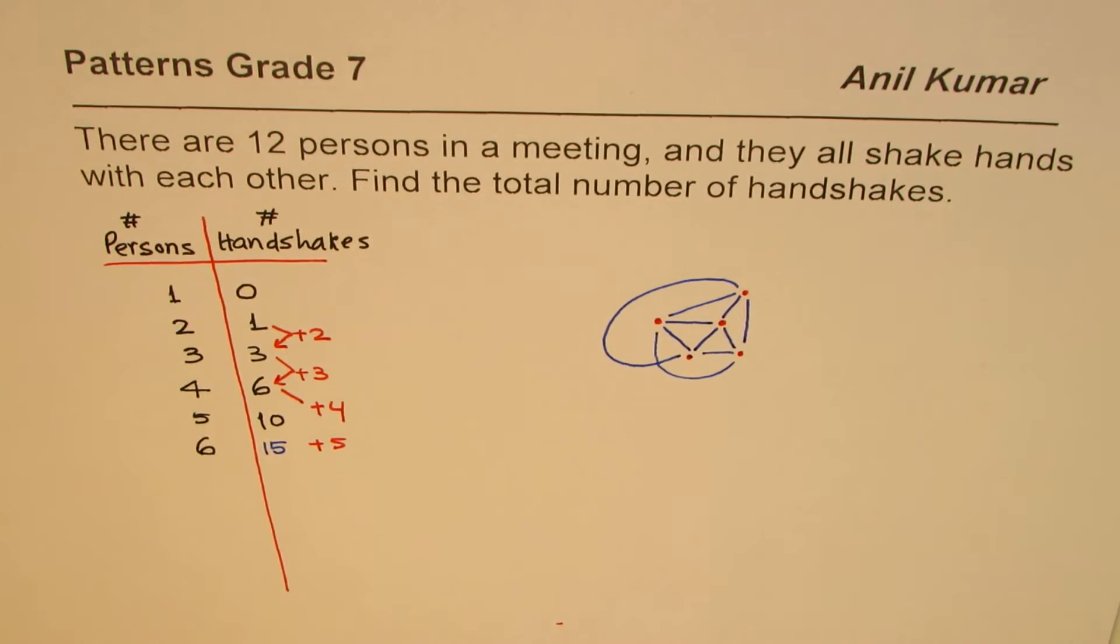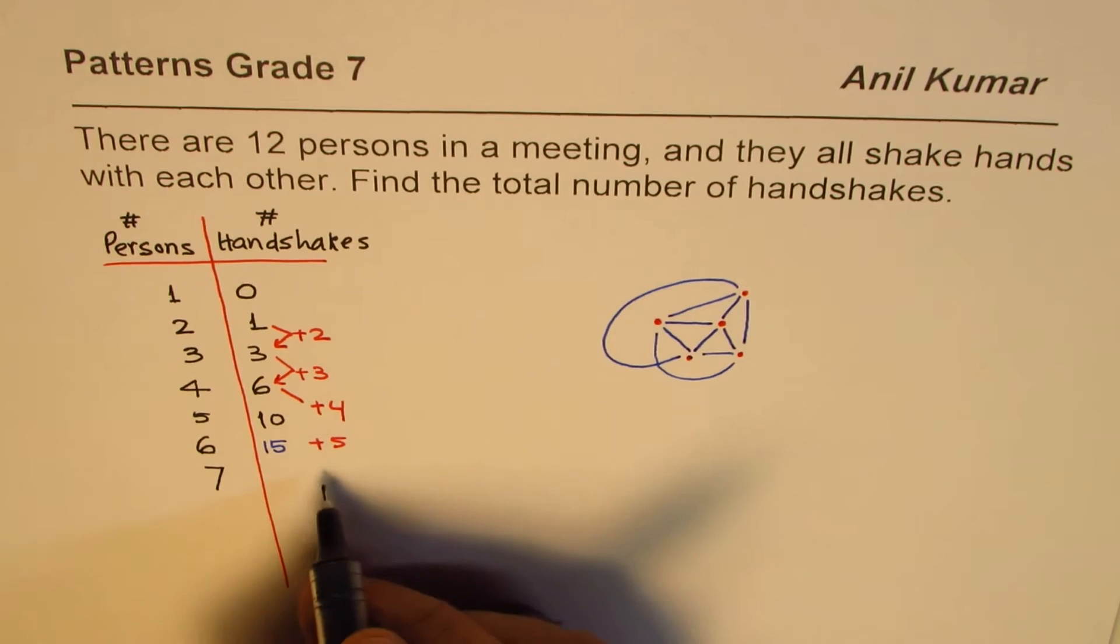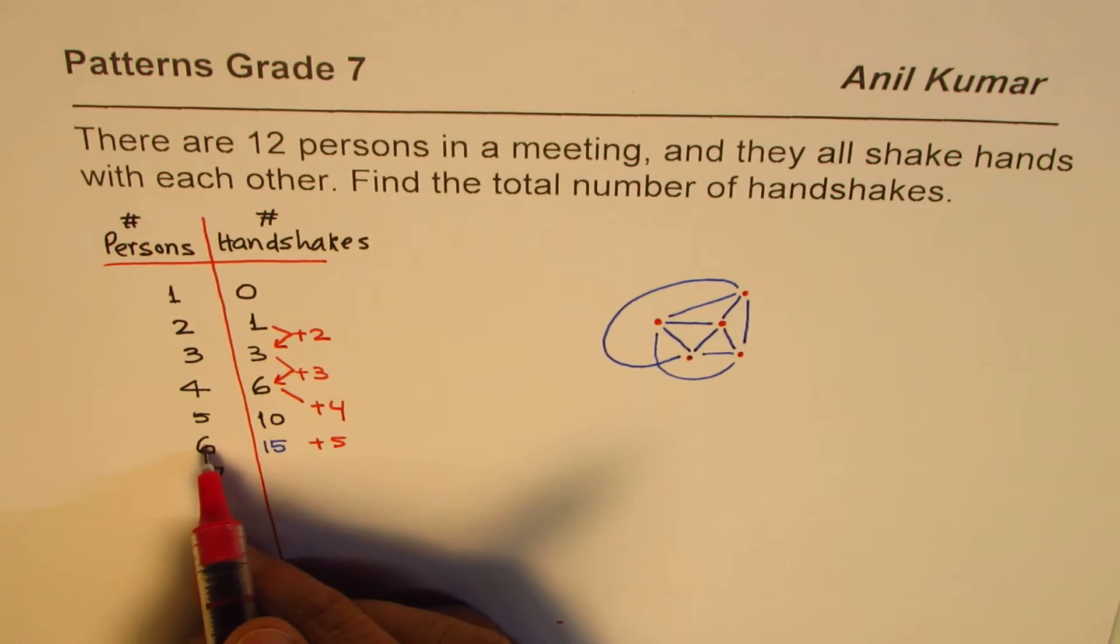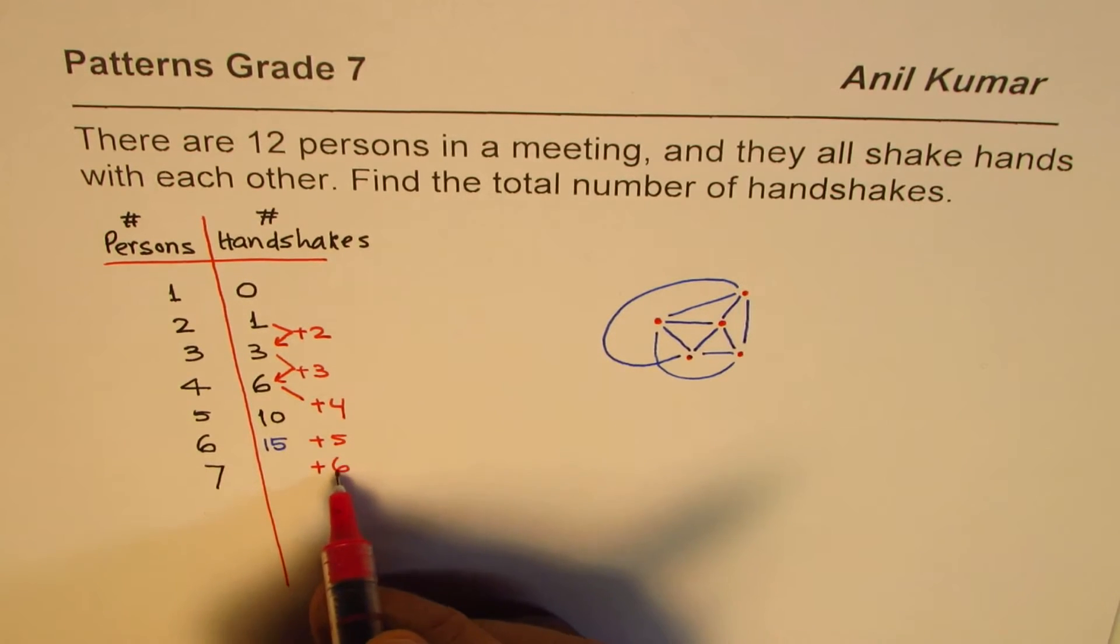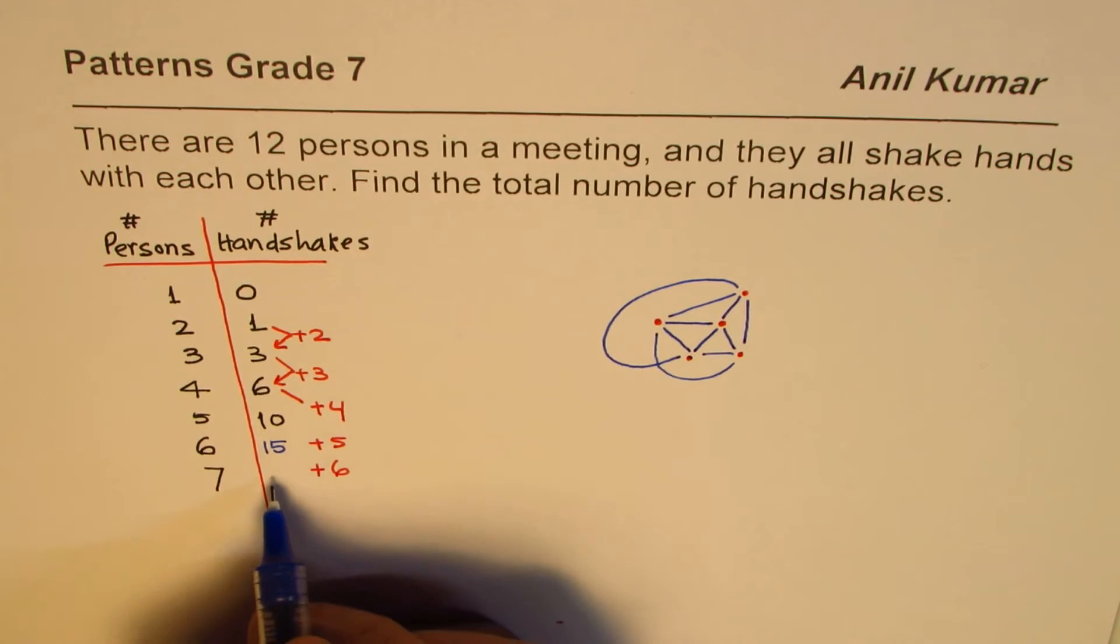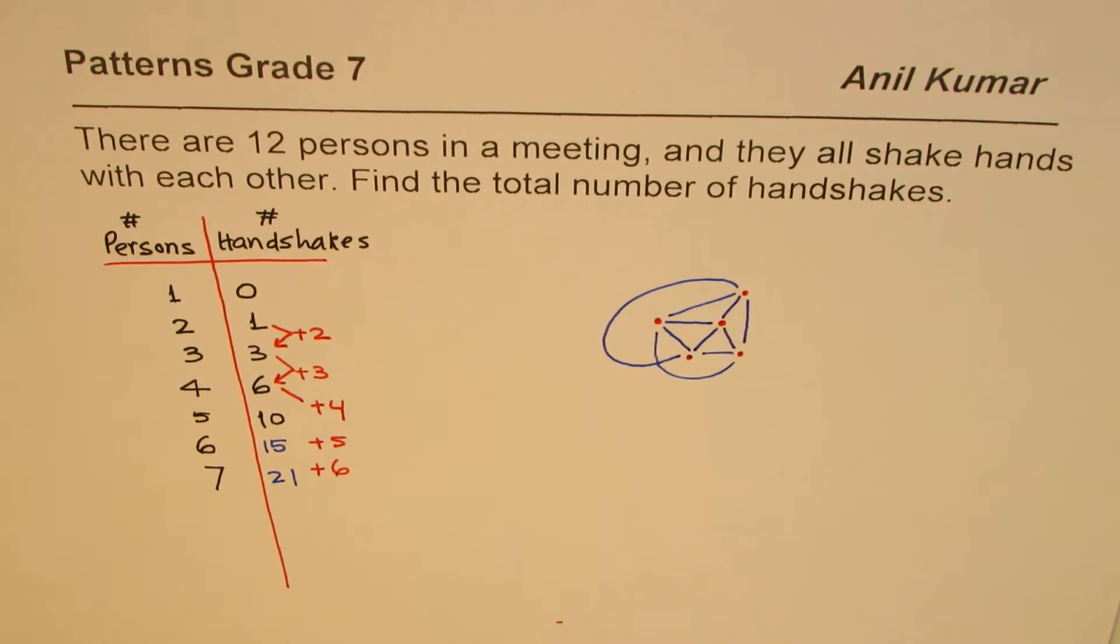For the seventh person, the seventh person does shake hands with 6 people already existing. That means 6 more, so 15 plus 6 gives you 21. Do you get the idea?